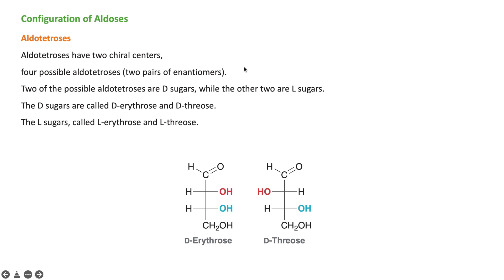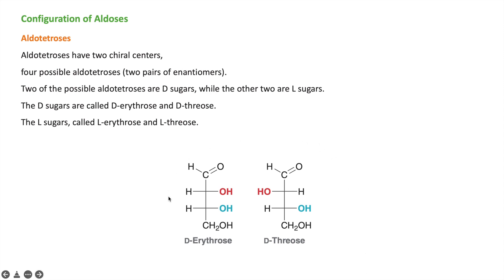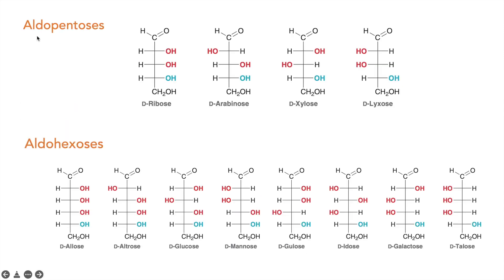For aldotetroses with two chiral carbons, 2^2 = 4, so four enantiomeric structures are possible — two pairs of enantiomers. Two of them are D-sugars: D-erythrose and D-threose, and two are L-sugars: L-erythrose and L-threose. In nature, only the D-forms of sugars are present, so the structures shown represent D-erythrose and D-threose.